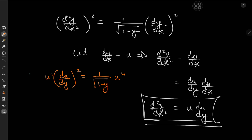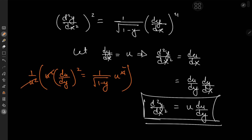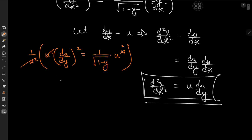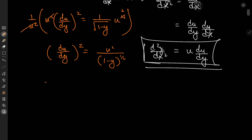We can divide through by u², and of course that way we miss out on the u = 0 solution, but that just yields y equal to a constant, which is not exactly the most exciting solution to miss out on — so no regrets. After that lovely cancellation, we have (du/dy)² equal to u² over (1 minus y)^(1/2). This implies du/dy equals ±u / (1 minus y)^(1/4).